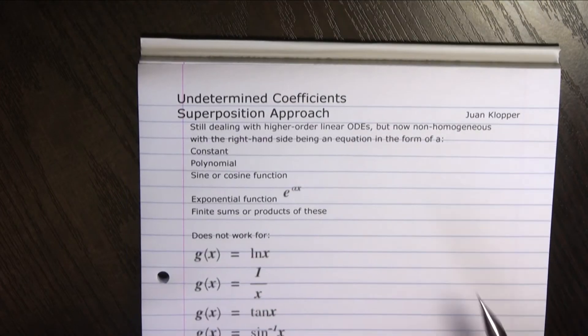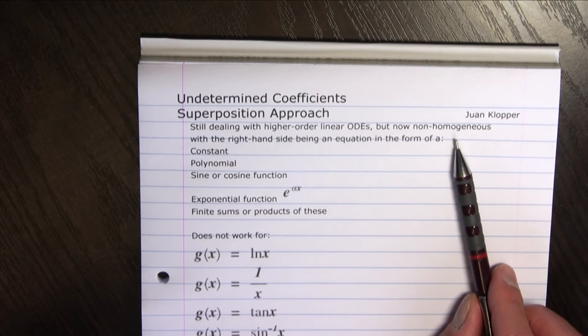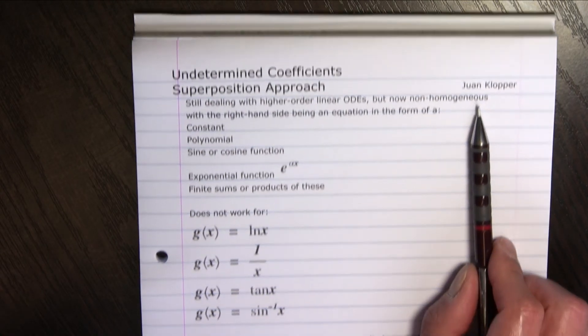So you're going to take your differential equation that's non-homogeneous. First, you're going to change it into homogeneous form, by letting the g of x, or the right-hand side, equal 0, and using the methods that we've learned up until now just to get that solution.